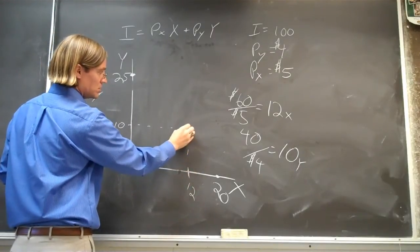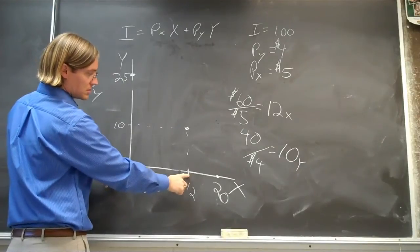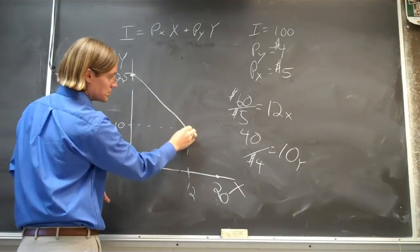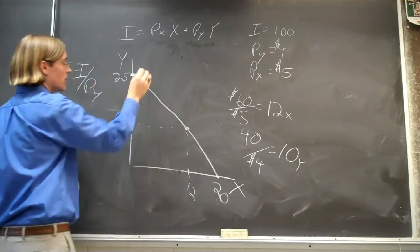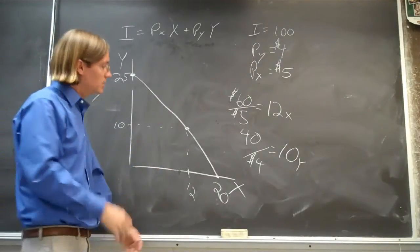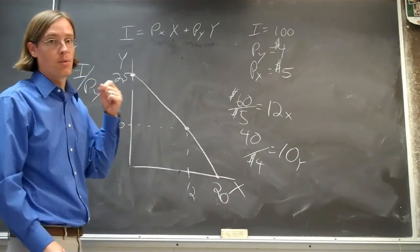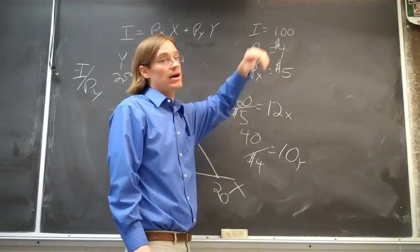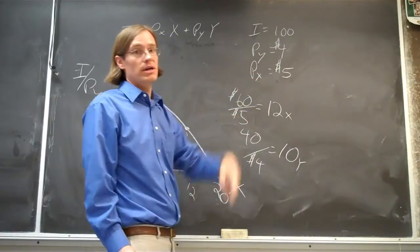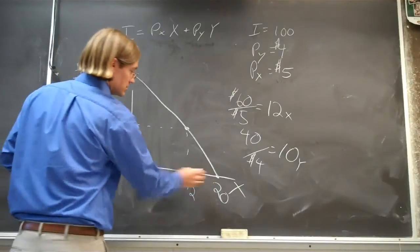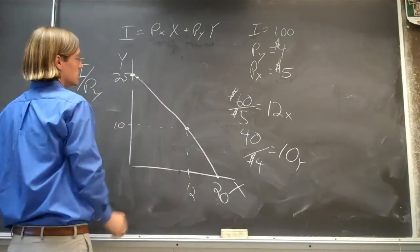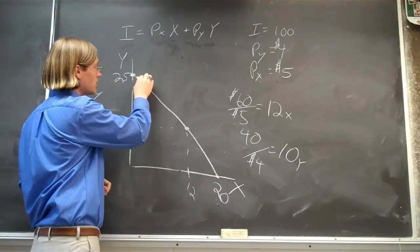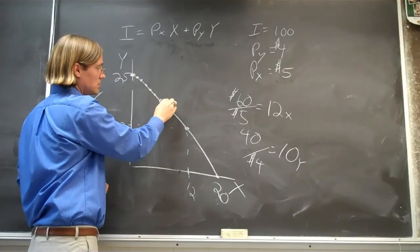That combination should be somewhere on this line — it should be a linear function. You can get any combination. Try it: start with buying one unit of good X. You're going to spend five dollars, you'll have ninety-five left over. Divide ninety-five by four and see how many units of good Y you can purchase — you'll be somewhere right about here. Then try two units of good X, and you should be able to move all the way down this curve.